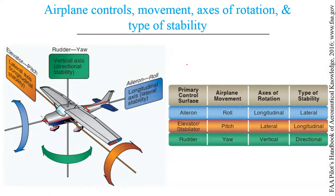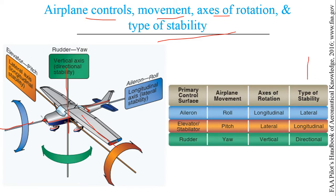Here is a consolidated summary: the primary control surfaces are aileron, elevator and rudder. Ailerons control roll about the longitudinal axis; the elevator controls pitch about the lateral axis; and the rudder controls yaw about the vertical axis. Regarding stability: roll is concerned with the lateral stability of an aircraft, pitch is concerned with longitudinal stability, and yaw is concerned with directional stability.